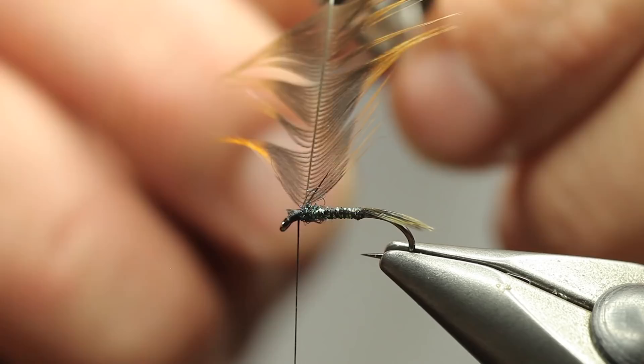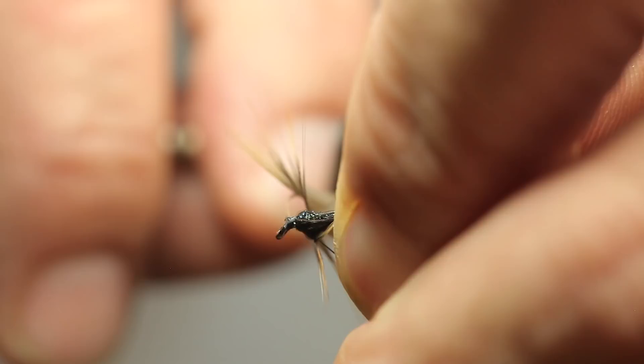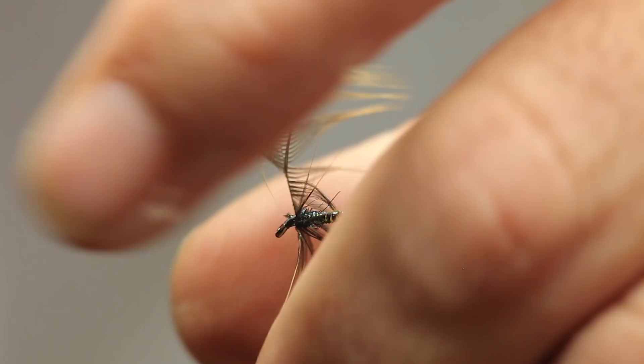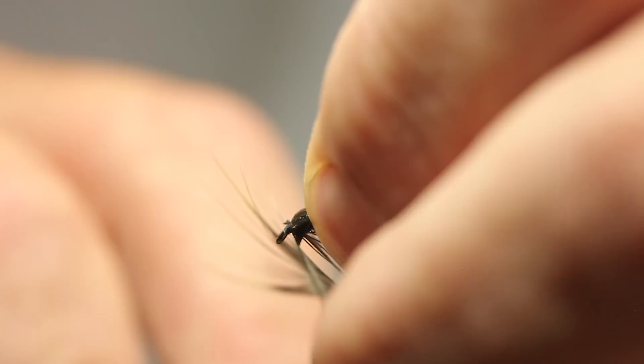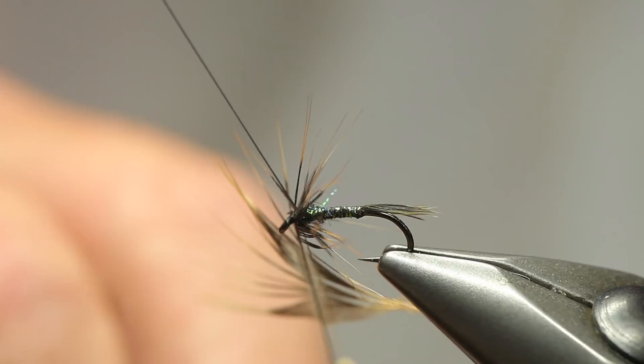And then what we're going to do, we're just going to tease the fibers backwards so that both sides have been tied in. So I'm going to tie one, and another one. Then just bring your silk through, making sure that it's locked in place.